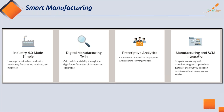You can see the behavior of the system before going into the real world. You can define your digital manufacturing twin of an entire factory and see how different parameters behave according to business logic. Prescriptive analytics can improve machine and factory output using machine learning models. Manufacturing and SCM integration is also very important: manufacturing work orders can be directly integrated into the manufacturing IoT system.